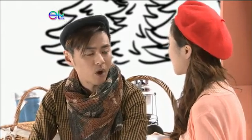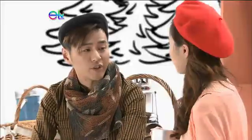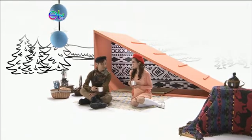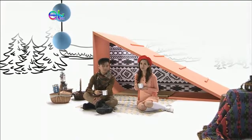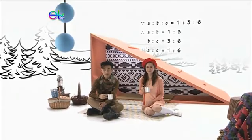We have discussed two-term ratio. A comparison of three or more quantities of the same kind is a continued ratio. Ratio can also represent the relationship among three or more quantities, expressed as A to B to C. If there are three terms, we call it a three-term ratio. Like a two-term ratio, multiplying or dividing each term by the same non-zero number leaves the ratio unchanged. Note that a two-term ratio can be expressed as a fraction, but if a ratio has three or more terms, we can't express it as a fraction.